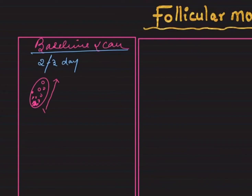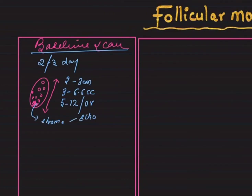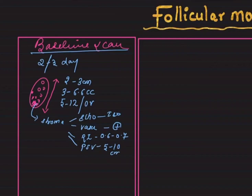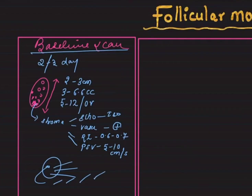In the baseline scan, what we look for is: the diameter of the ovary, which should normally be between 2 to 3 centimeters; the volume of the ovary, normally 3 to 6.6 cc; the antral follicle count, normally 5 to 12 per ovary. In the stroma, we assess the echogenicity — usually isoechoic — the vascularity, which should be present, the resistive index of stromal vascularity, normally 0.6 to 0.7, and the PSV, normally 5 to 10 cm/sec.